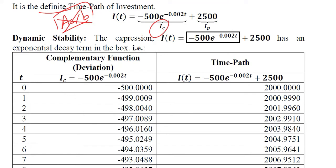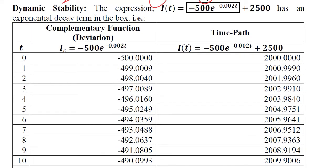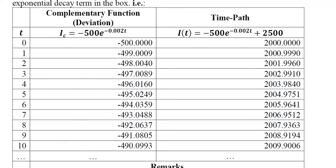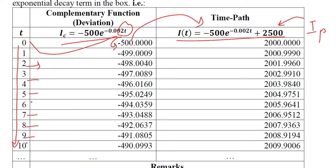As I said before this is IC and this is IP. Now we can make a graph with it and for the graph we need to make a table. The complementary function is based on time and the whole time path is based on the complementary function itself and the equilibrium. So we have chosen the values from 0 to 10 and when we put 0 here we get this value and so on. We are putting various values of t and getting various values of IC.